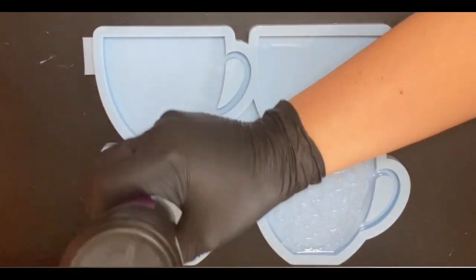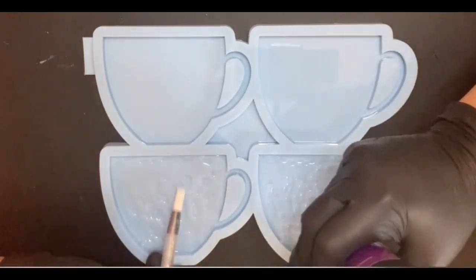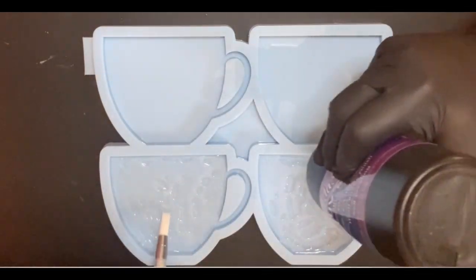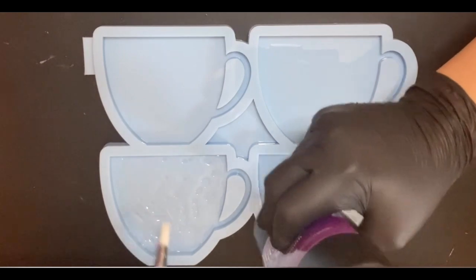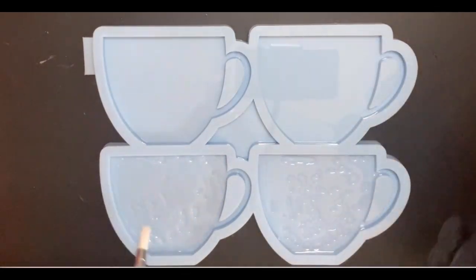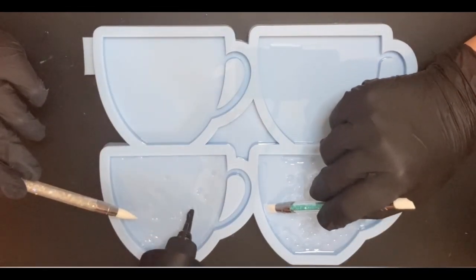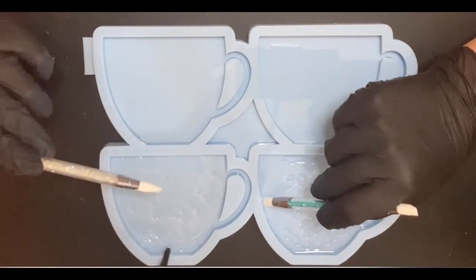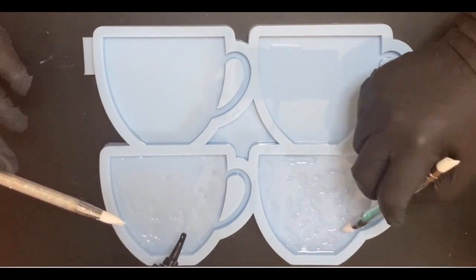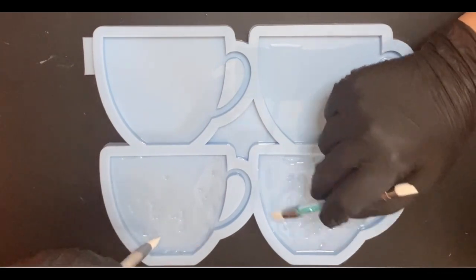So we are just spreading out the resin. I'm always a little bit slower than Sandra. Yeah, we were really laughing about it. So I'm just busy with my mold and now Sandra does her mold. And then I fill up some little gaps which are not covered with resin yet.